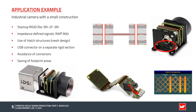The next example shows an industrial camera with a small construction, using the same 3RI 2F 3RI stack-up. It features impedance-defined signals on the flex layer, mesh design on the reference layer, a USB connector on a separated rigid section, avoidance of connectors, and saving of footprint areas.